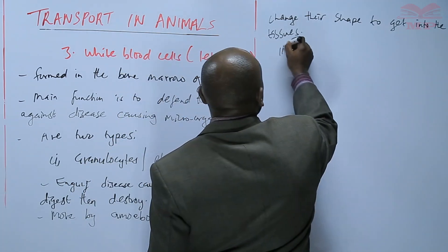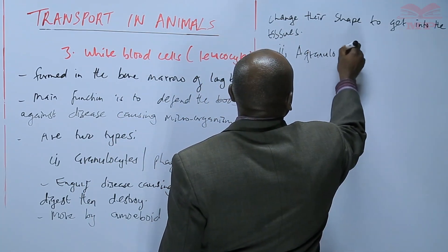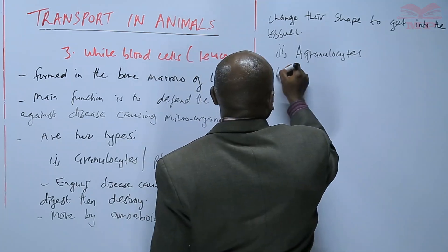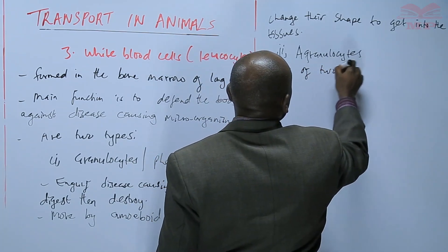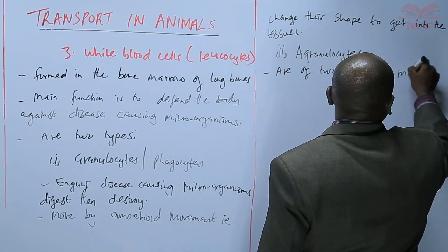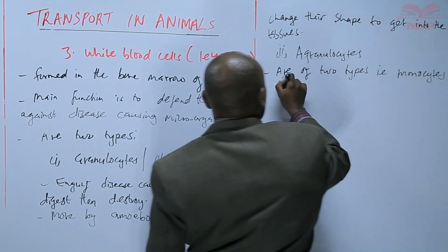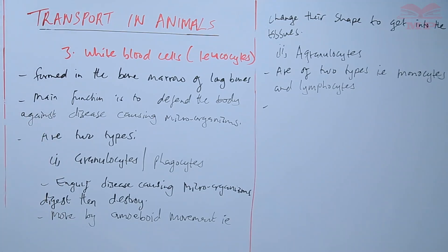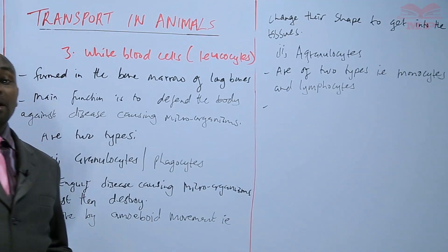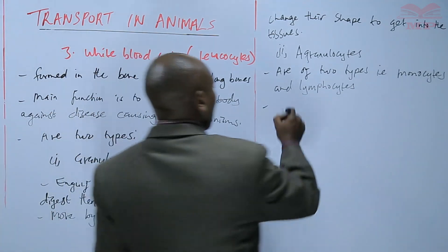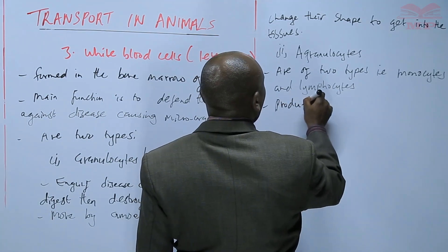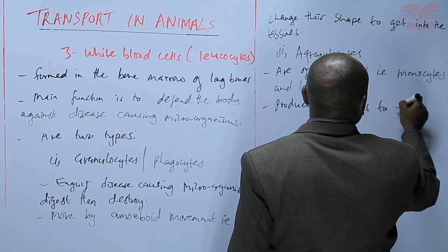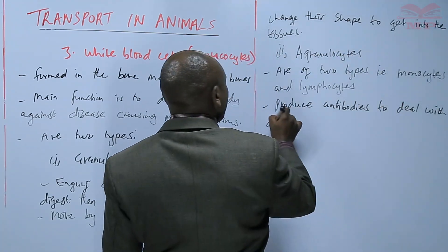We have the second type, and these ones are called agranulocytes. They are of two types: monocytes and lymphocytes. These ones deal with disease-causing microorganisms by producing chemical substances called antibodies. They produce antibodies to deal with disease-causing microorganisms.